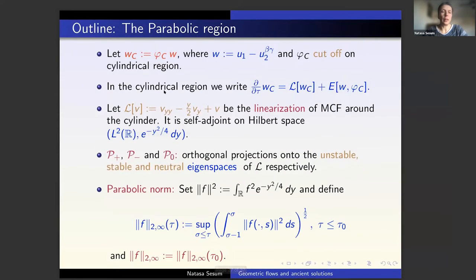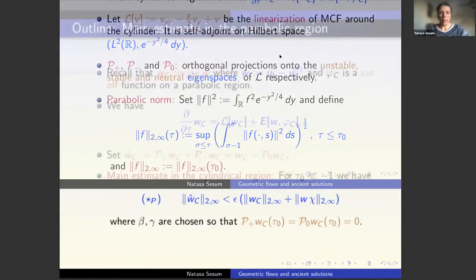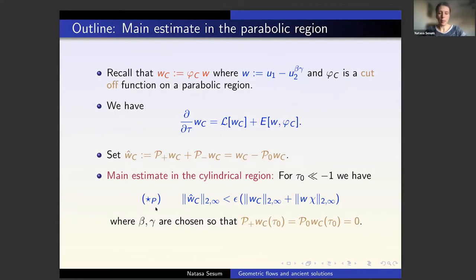Here is what we had: w_c is phi_c times w, where w is the difference of two solutions. The parameters beta and gamma — one corresponds to translations in time and the other to dilations. We multiply by the function phi_c, and we consider w_c in the cylindrical region. The estimate I discussed yesterday, called (star)_p, proved that w-hat — the projection of w_c on the positive and negative eigenspace of the linearized operator — is less than epsilon times the full norm, times the norm of the difference times chi, where chi is the cutoff function of the transition region.